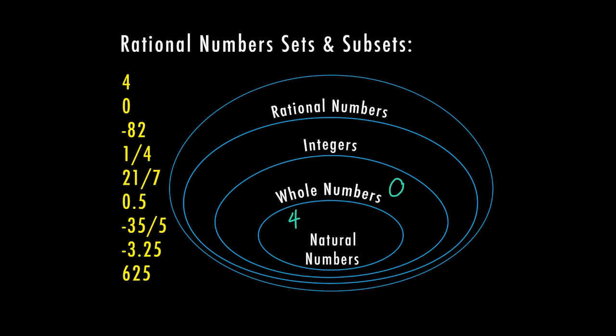Negative 82 is an integer and because it is an integer whole number, we're going to put that in the integer category. 1 fourth is a fraction. So that fraction is going to go into our rational numbers. I can also write that as a decimal 0.25.